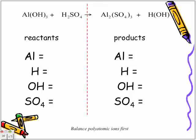Here's a rule at the bottom. As we said in the previous slide, balance polyatomics first. So let's balance one of them. Let's look at the reactant side. On the reactant side, we have one aluminum. On the product side, we have two aluminum. We look at the one that's the smallest and we know that we need to increase the number of aluminum on the reactant side because we have more on the product side.